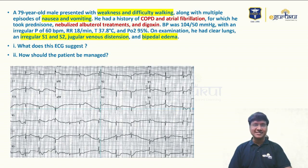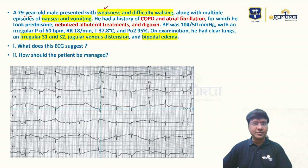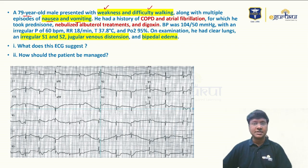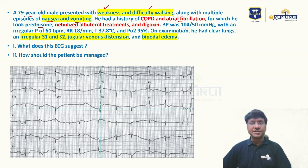The clinical scenario of today involves a 79-year-old elderly man who presented with weakness, difficulty in walking, and multiple episodes of nausea and vomiting. He has a history of COPD and atrial fibrillation, for which he is taking prednisolone and nebulized albuterol for COPD, and digoxin for atrial fibrillation.